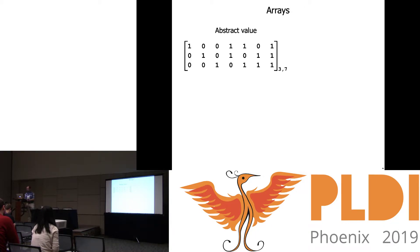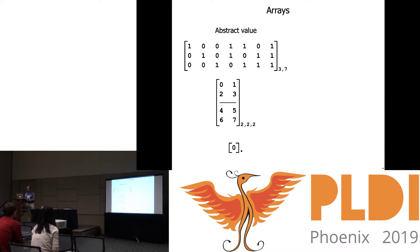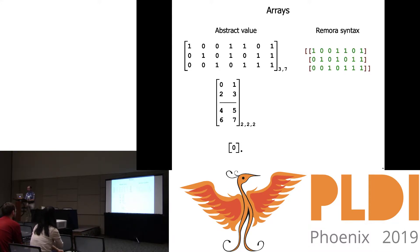The abstract values all look like matrices, tensors, or scalars, but we need programmatic notation. Remora syntax uses nested brackets to distinguish how many dimensions you're wrapping around something. So you can say the matrix is a vector of vectors, or the 3-tensor is a vector of matrices. The null case of nested bracket syntax is just to use no brackets when you want a scalar.